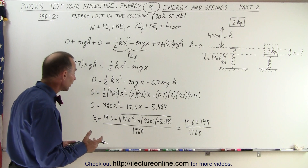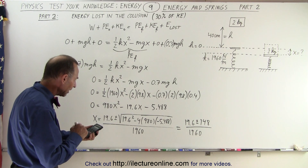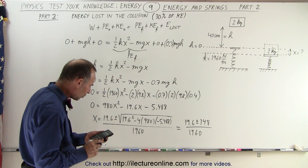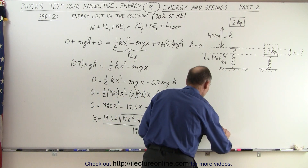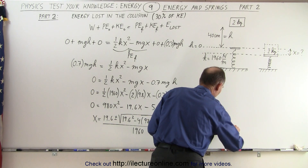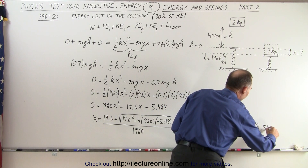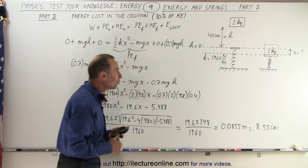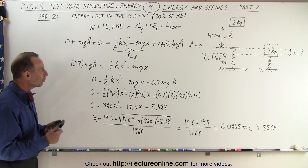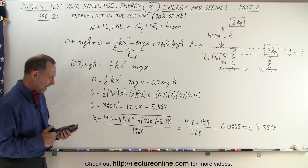Since x can't be negative, we take the positive root: 19.6 plus 148, divided by 1960, and the answer is 0.0855 meters, which is equal to 8.55 centimeters. That's the new compression of the spring. Considering we lost 30% of the energy, the spring will only be compressed 8.55 centimeters instead of 10 centimeters.